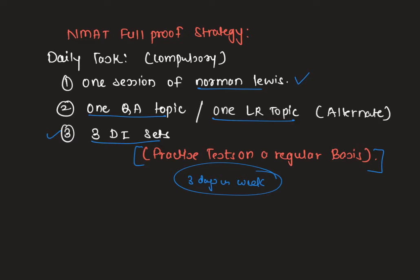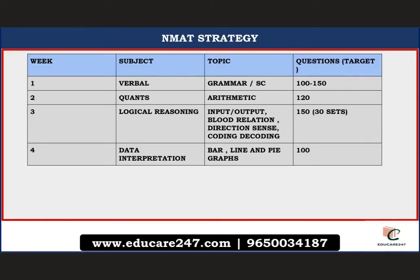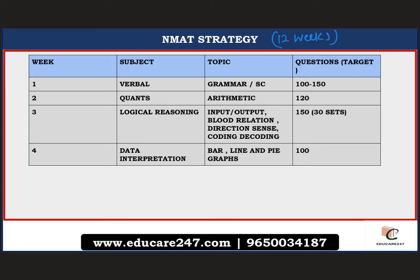The timetable I'm giving you is completely complementary to this foolproof strategy. Together, nothing can stop you from getting a call from NMIMS Mumbai. Assuming we have 12 weeks in hand, here is the week-by-week plan. In Week 1, major focus — 70% — should be on verbal: grammar, sentence correction, tenses, connectives, parallelism, and related topics. Practice 100 to 150 questions.